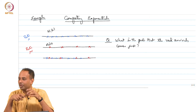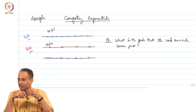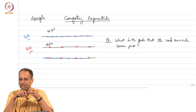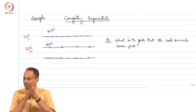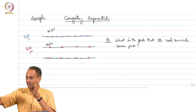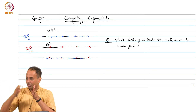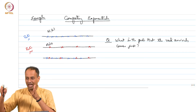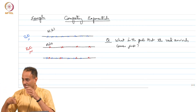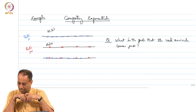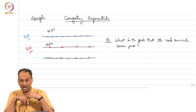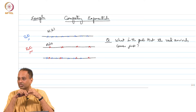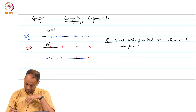The mu exponential and lambda exponential are competing, and you are looking at the probability that the mu exponential wins. Because starting at any time, the time for the red arrival is a mu exponential, the time for the blue arrival is a lambda exponential, and they are independent because they are independent processes. You want the probability that the red arrival wins.